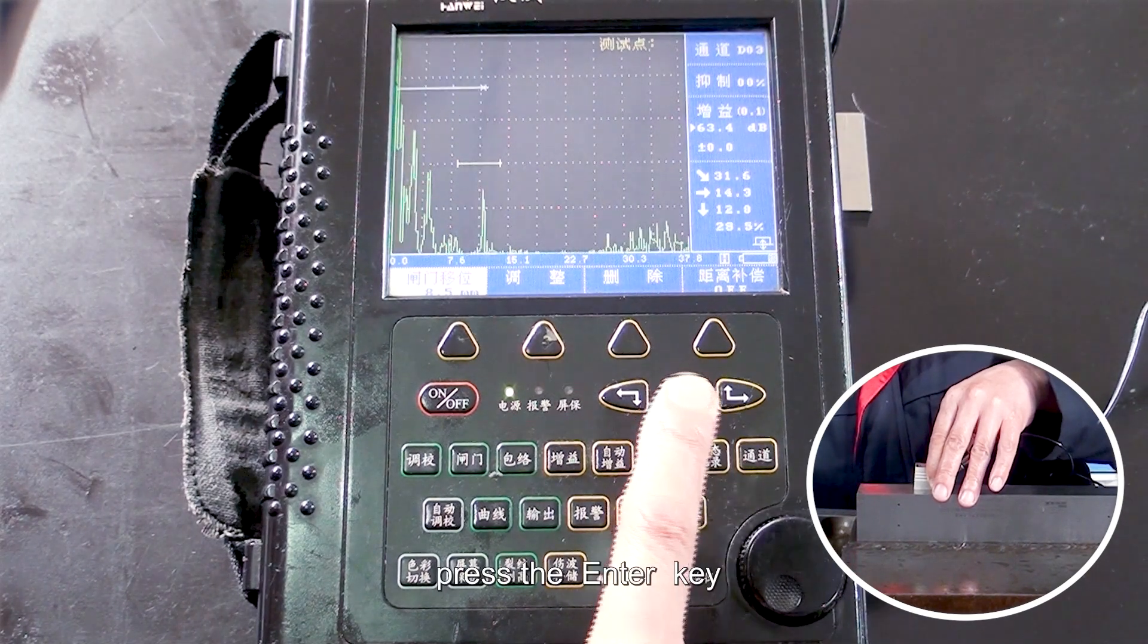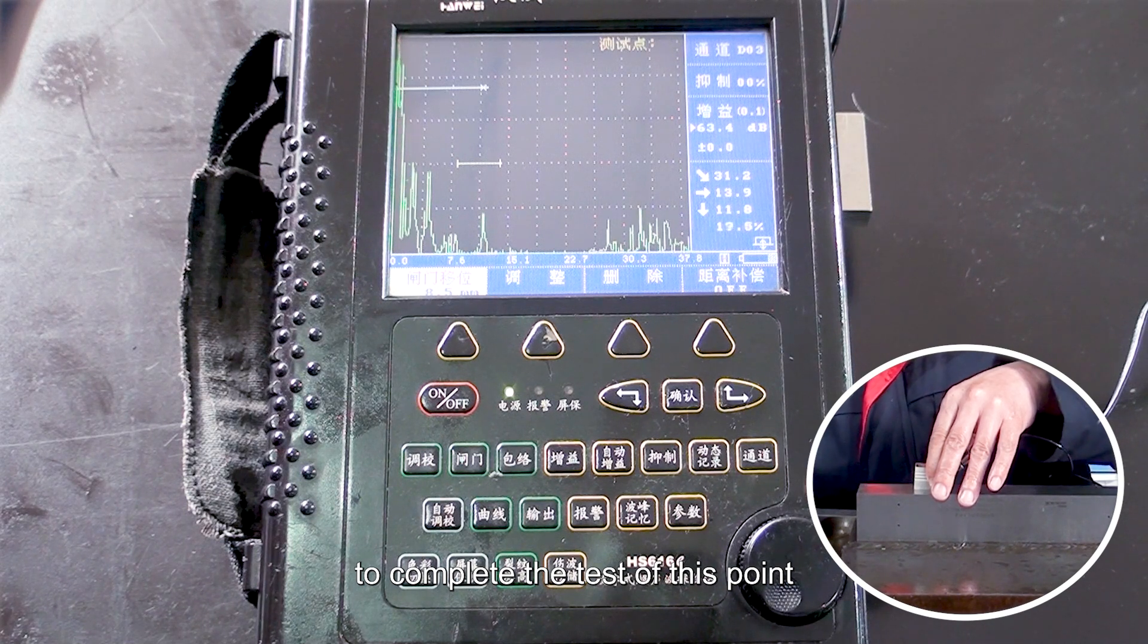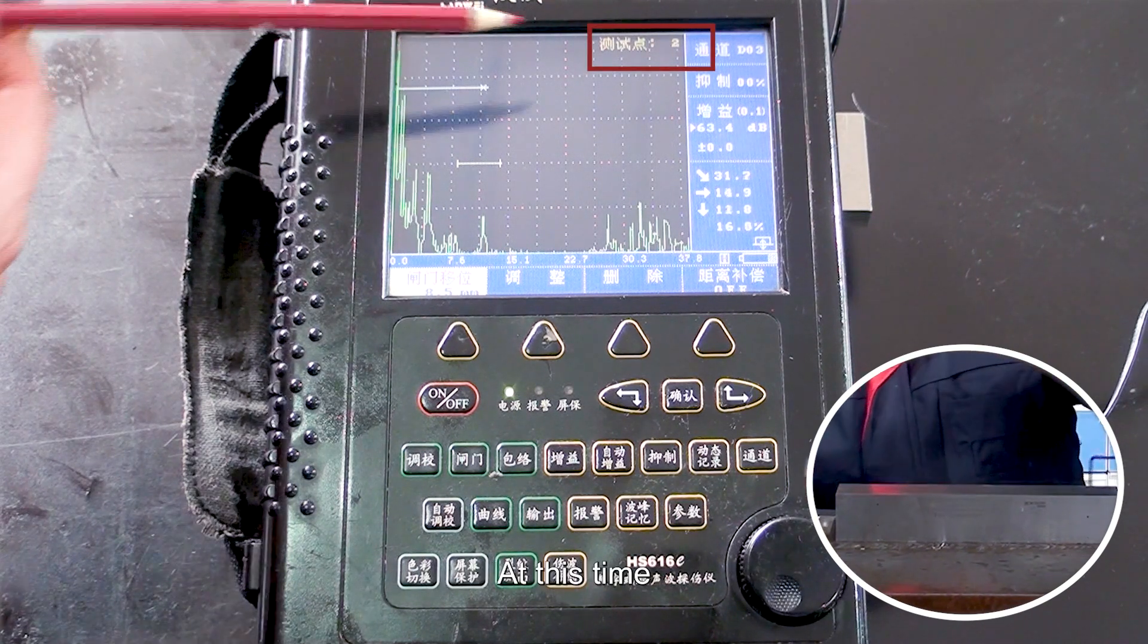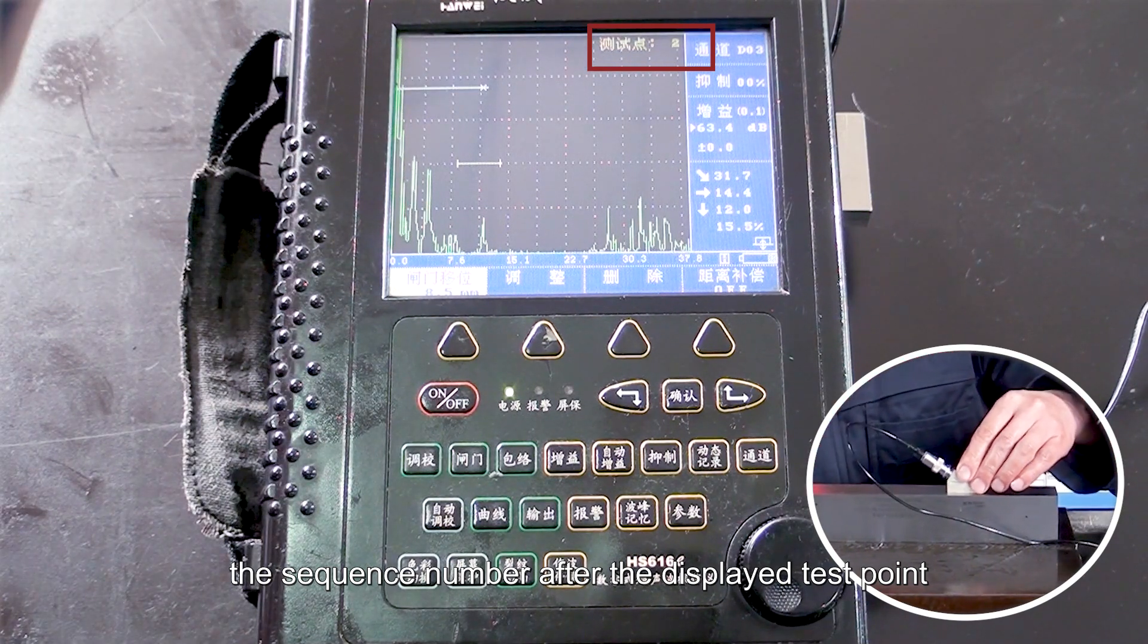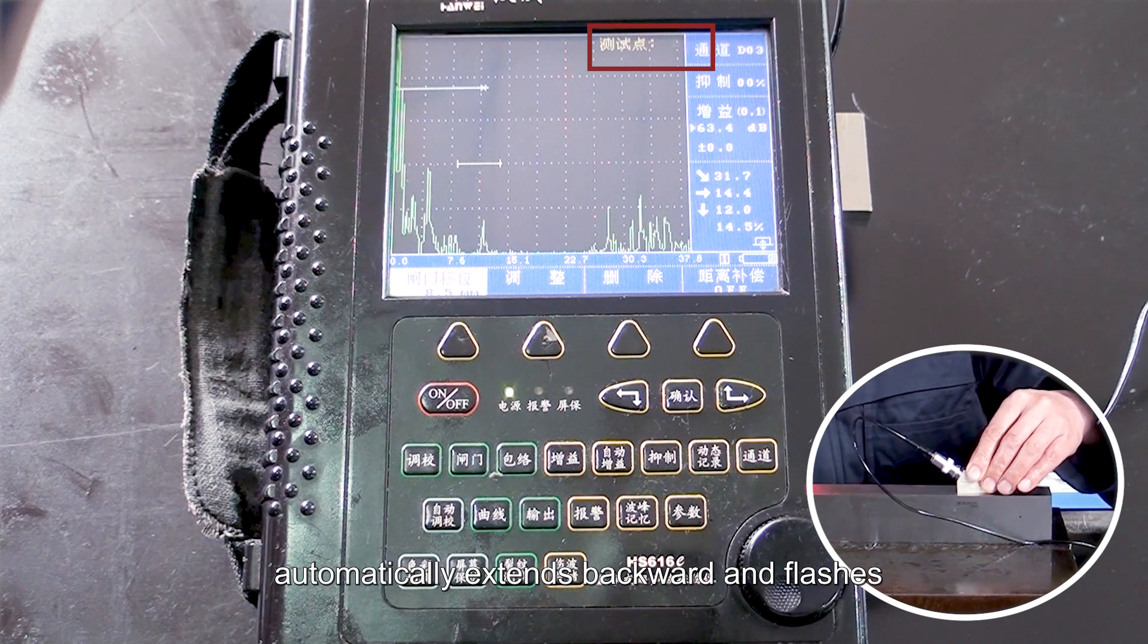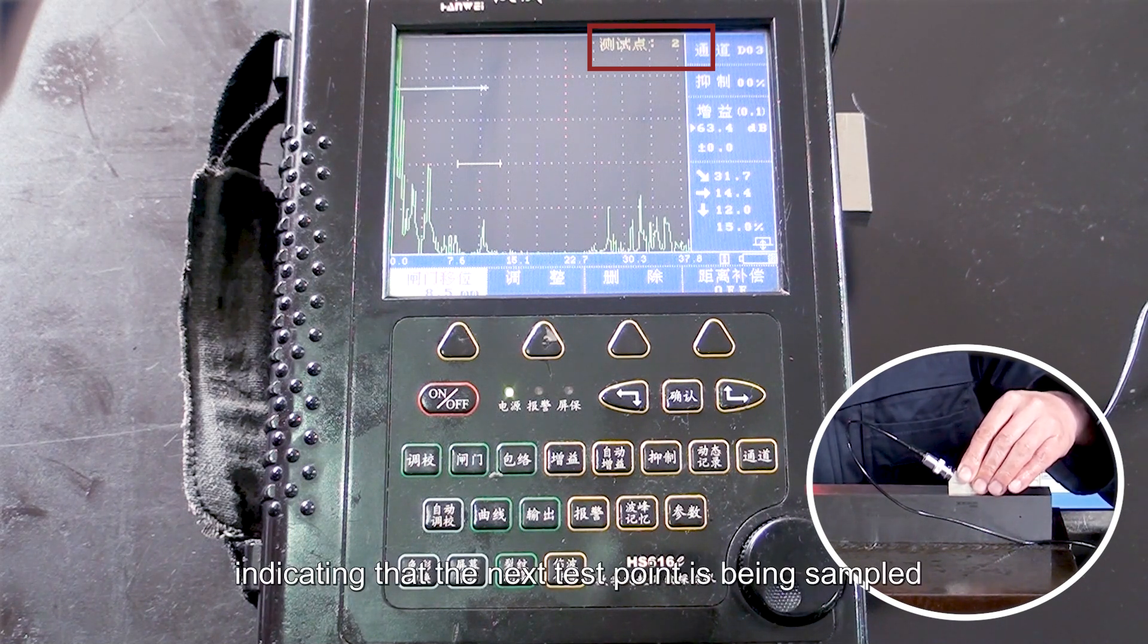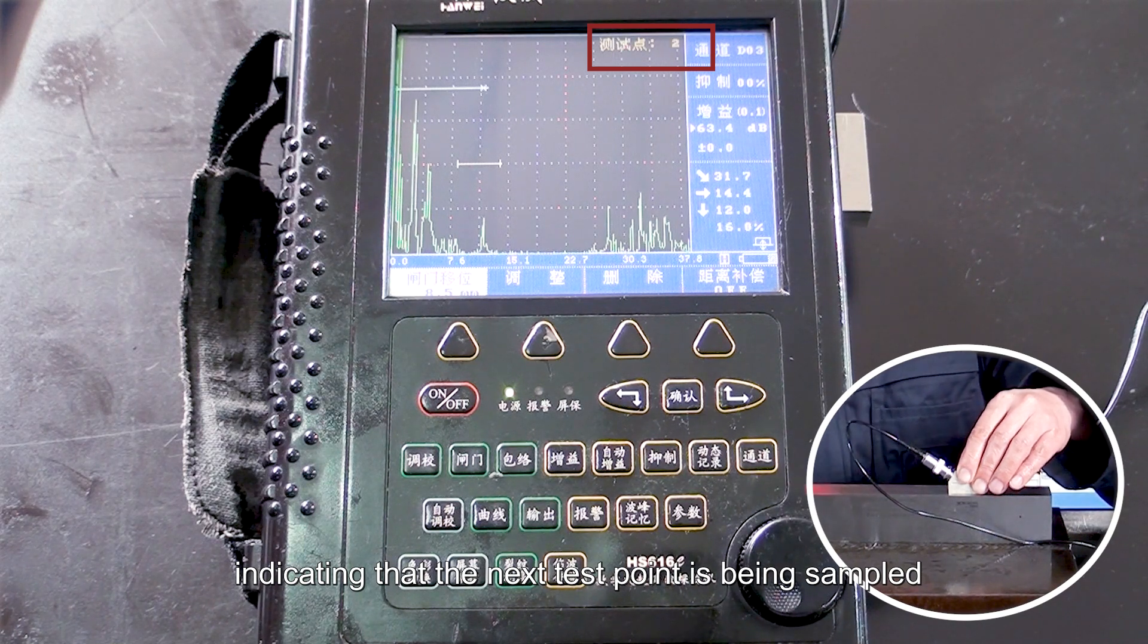Finally, press the Enter key to complete the test of this point. At this time, the sequence number after the displayed test point automatically extends backward and flashes, indicating that the next test point is being sampled.